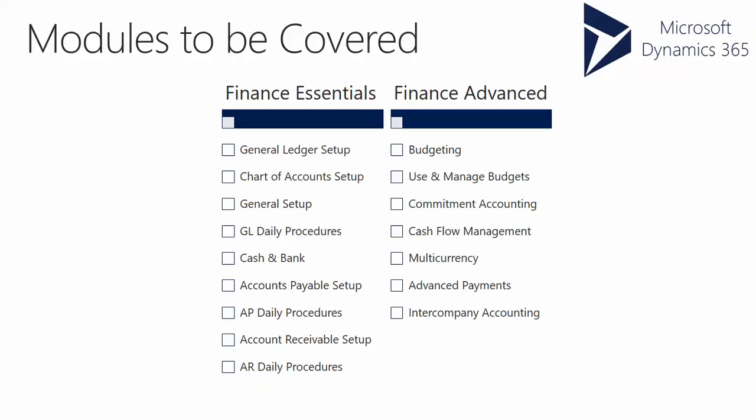Intercompany accounting applies when you have multiple organizations — intercompany needs to be configured, which reduces a lot of manual effort. Consolidations come into the picture when you have group companies and data needs to be consolidated at year end. Collections management covers setting up and configuring collection letters to send to customers after past due dates. Year-end close covers the closing worksheets and adjustment entries needed at year end.